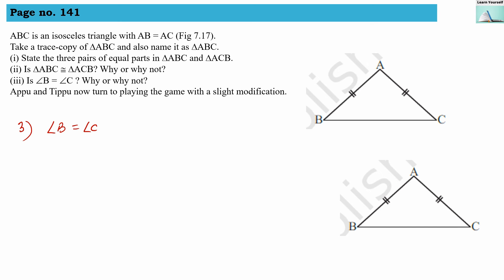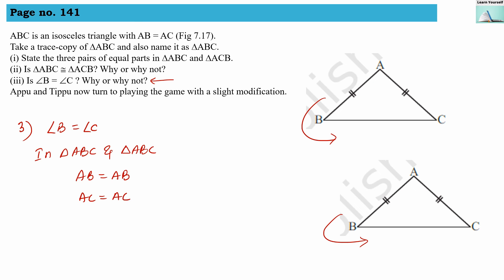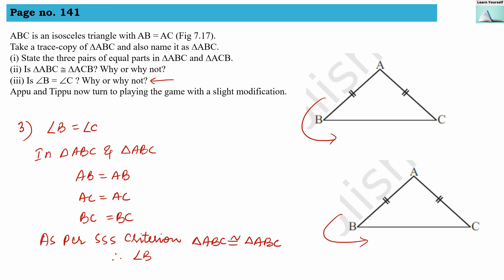The third question: why does angle B equal angle C? In triangle ABC and its trace copy triangle ABC, no specific name pattern like ACB is given, so we use the same anti-clockwise name for both. We have: AB equals AB, AC equals AC, and BC equals BC — all because it is the same triangle and same sides. By SSS (Side-Side-Side) criteria, triangle ABC is congruent to triangle ABC. Therefore, angle B equals angle C.